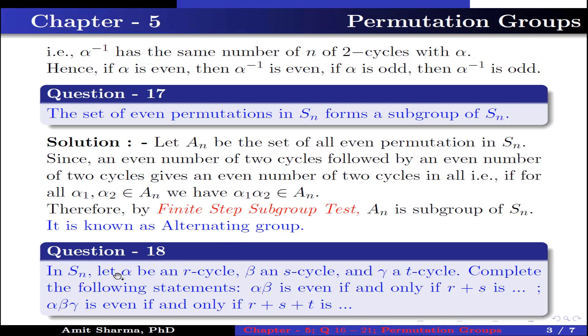Question number 18. In Sₙ, let α be an r-cycle, β an s-cycle, and γ a t-cycle. Complete the following statements: αβ is even if and only if r + s is dash. αβγ is even if and only if r + s + t is dash.